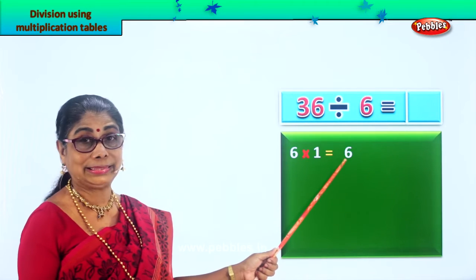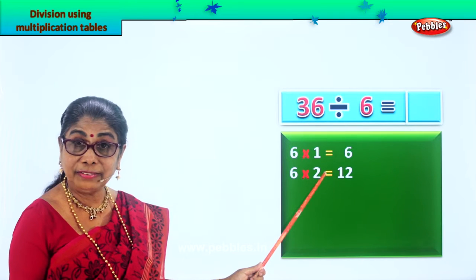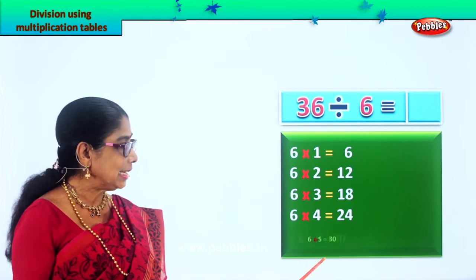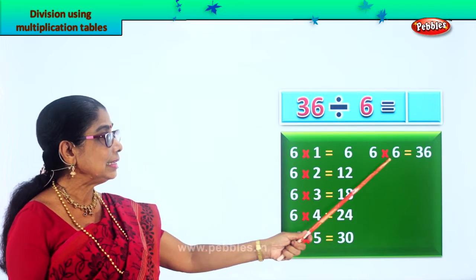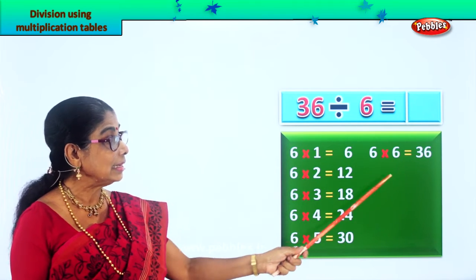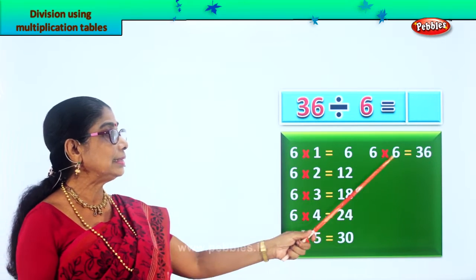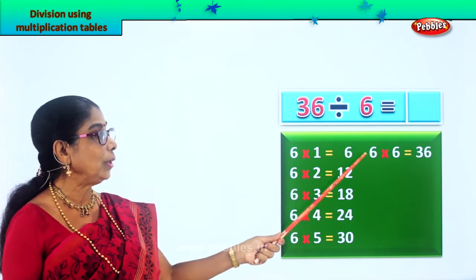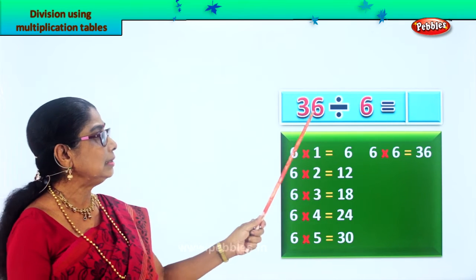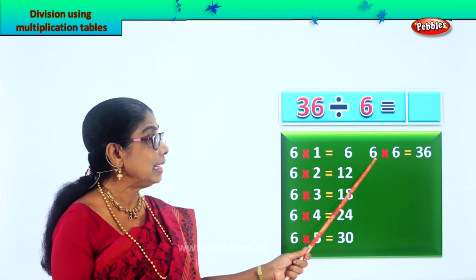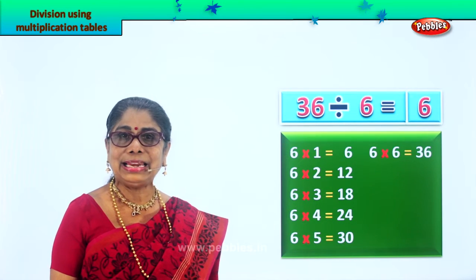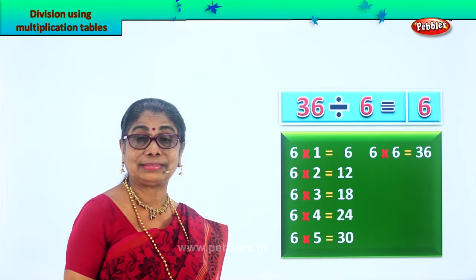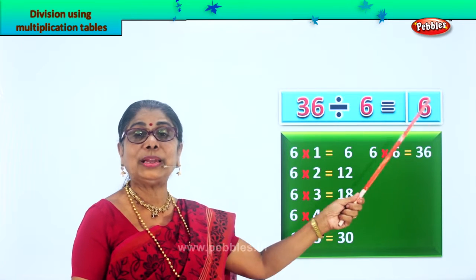6 ones are 6, 6 twos are 12, 6 threes are 18, 6 fours are 24, 6 fives are 30, 6 sixes are 36. We need only up to 36. We have 36 items to be grouped into 6 groups — and in each group, how many? 36 divided by 6 gives the answer 6. In reverse multiplication, 6 sixes are 36. You found the answer using the tables.